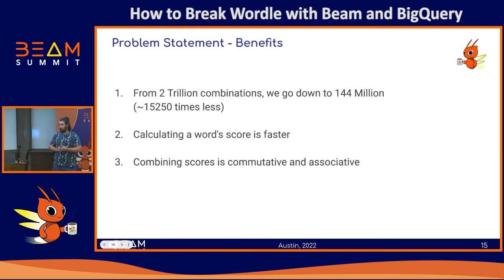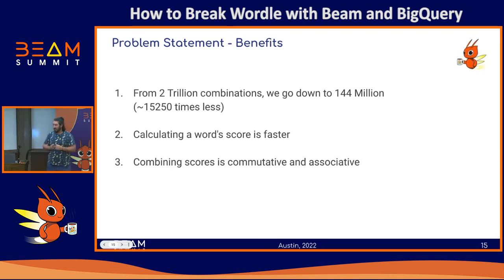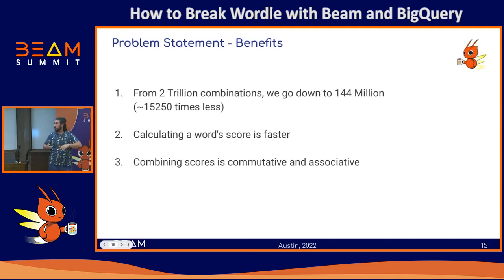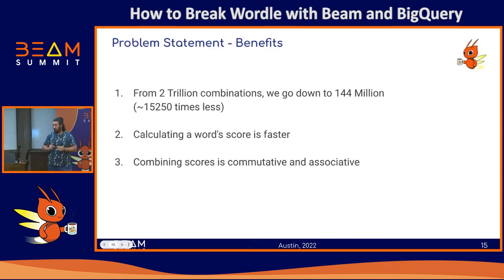The benefits of this approach: we get from two trillion combinations down to a little more than 144 million — 50,000 times fewer, so it runs 50,000 times faster. And it's even faster than that, because removing duplicate letters makes calculating the score easier for an individual word. If something is yellow, you're 100% sure it's going to be yellow. And more importantly, since there's no letter intersection between words, you can add up the scores — word one plus word two, you just add the scores. It makes it commutative and associative, so I don't care about the order even less.